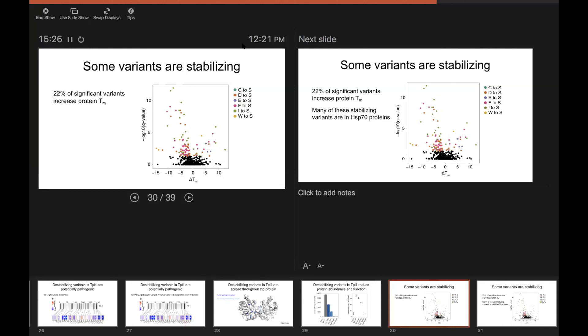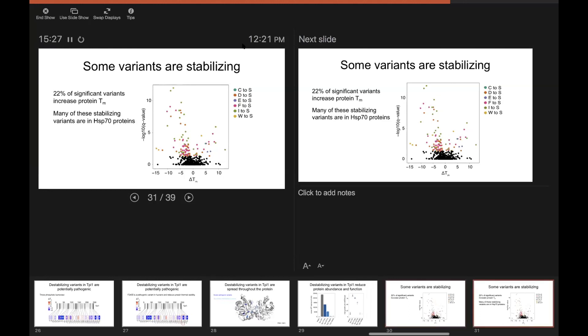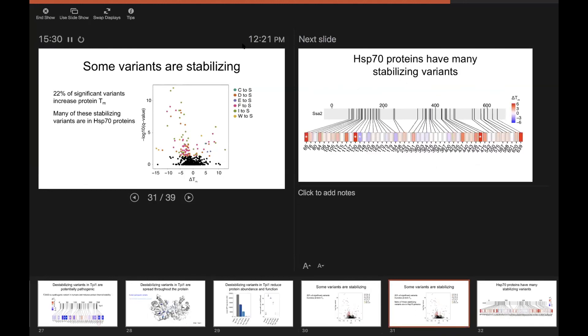But when we looked at what proteins these variants were in, we were struck by the fact that about half of the significantly stabilizing variants were in homologues of Hsp70 proteins. And Hsp70, for those that don't know, is a conserved family of chaperones that bind to peptide substrates. And in yeast, there are 14 Hsp70 proteins, and we covered 10 of them in our experiment.